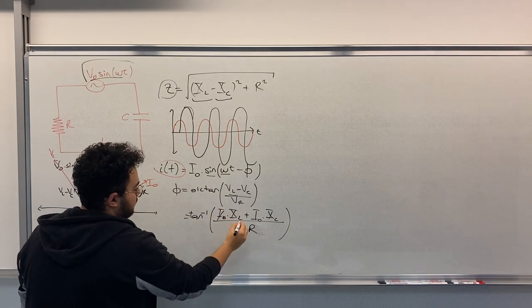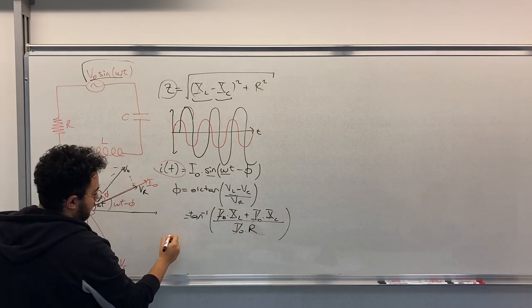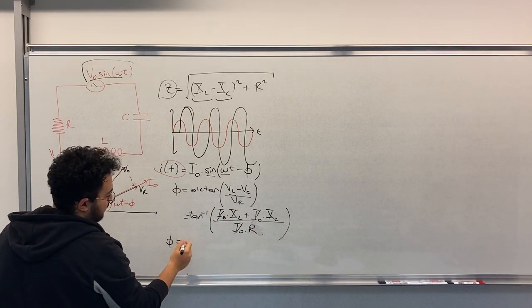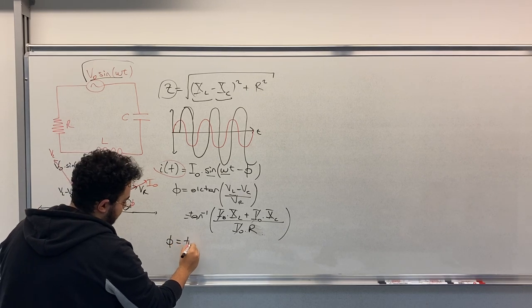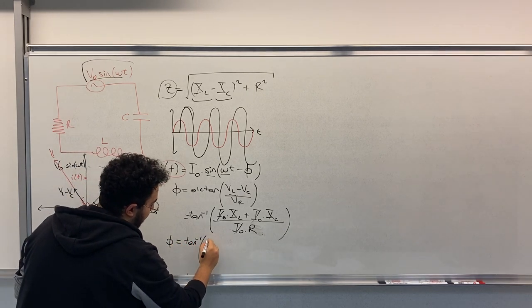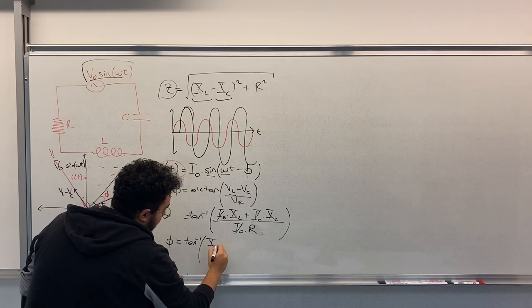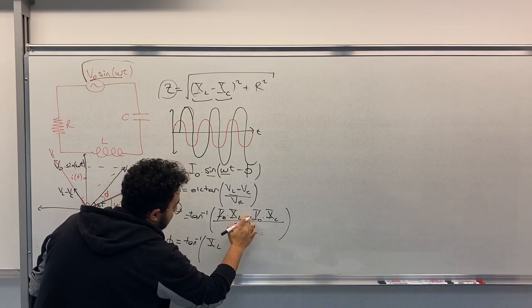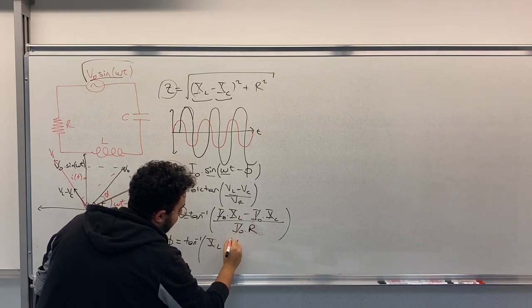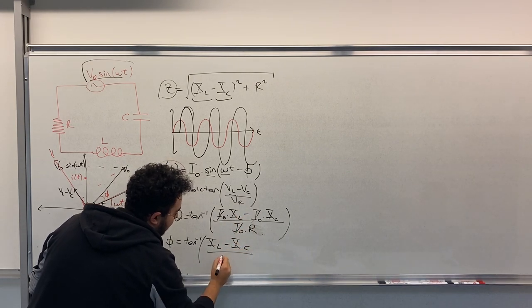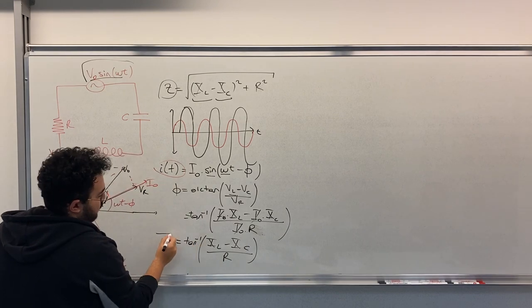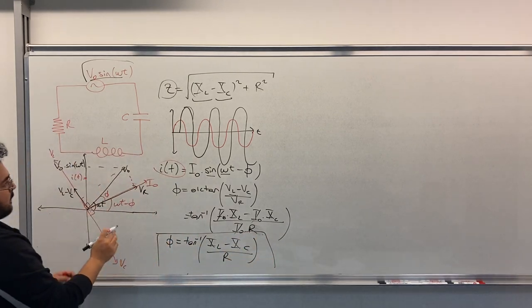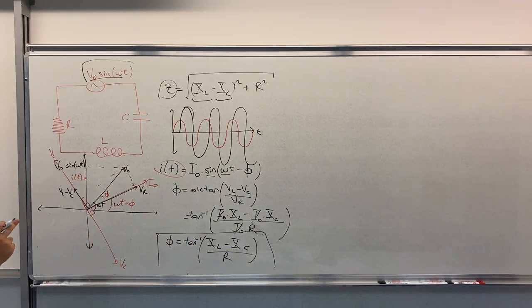Now you can divide it. So we have phase equals to arctan of XL minus XC divided by R. So this is the phase difference between EMF and current.